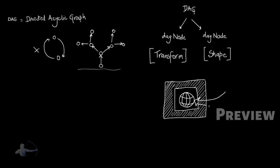The deeper or the inner node is the shape node. And the outer node is transform node.